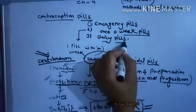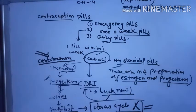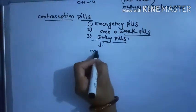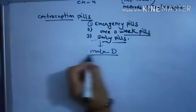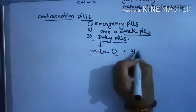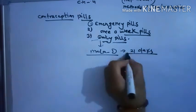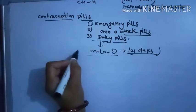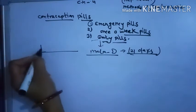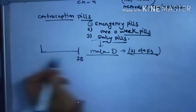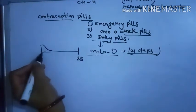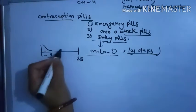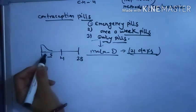Third are daily pills, which are the most common — for example, Mala-D. These pills are taken for 21 days, corresponding to the female menstrual cycle. The female menstrual cycle runs from days 1 to 5 for menstruation, followed by the follicular and other phases up to day 14.